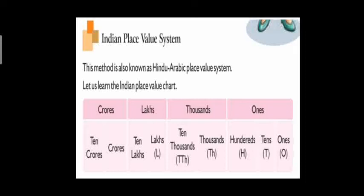Children, look onto the table. It is the place value chart of the Indian system. Always read from the right side to the left side. The terms are: Ones, Tens, Hundreds, Thousands, Ten Thousands, Lakhs, Ten Lakhs, Crores and Ten Crores. Remember carefully — Ones, Tens, Hundreds, Thousands, Ten Thousands, Lakhs, Ten Lakhs, Crores and Ten Crores.